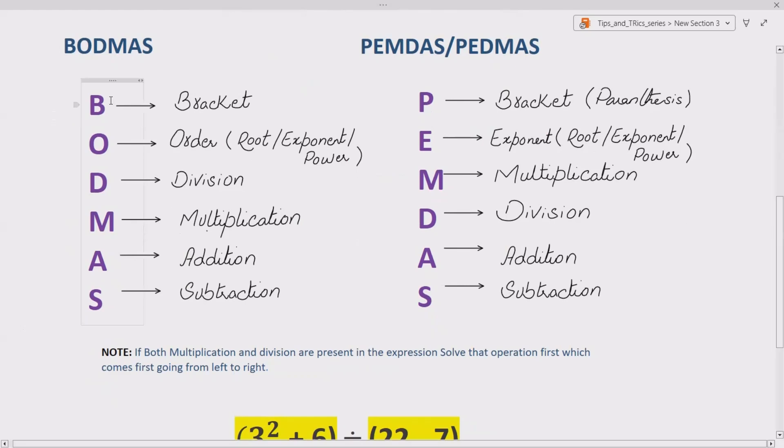BODMAS says: if we are given any arithmetic expression, solve brackets (i.e., parentheses) first. After that, solve order (i.e., exponent), then do division and multiplication, and then addition and subtraction. Remember, BODMAS says division then multiplication, while PEMDAS says multiplication then division.